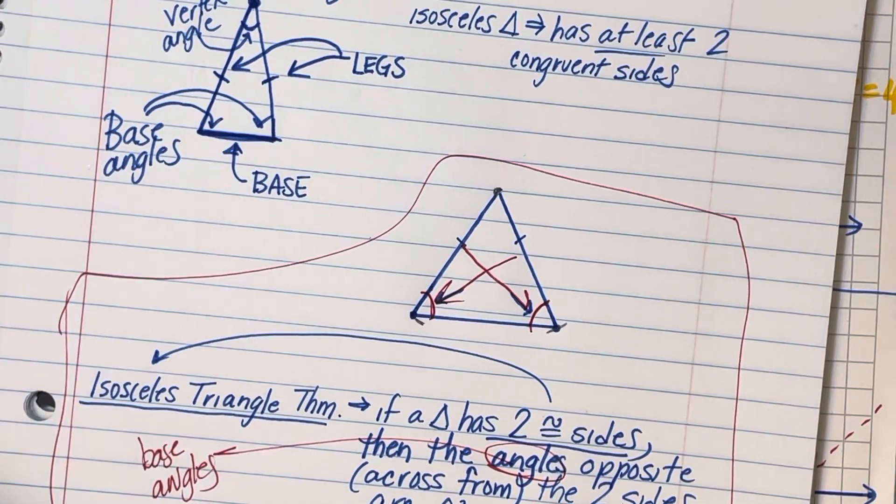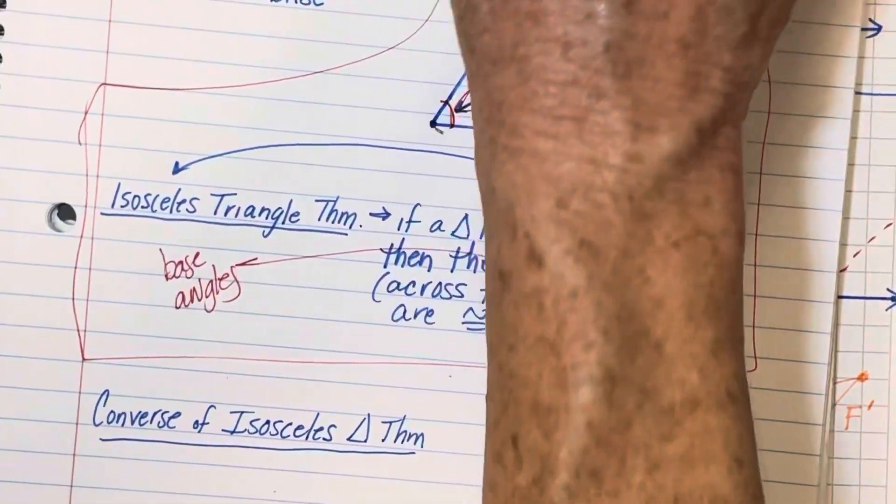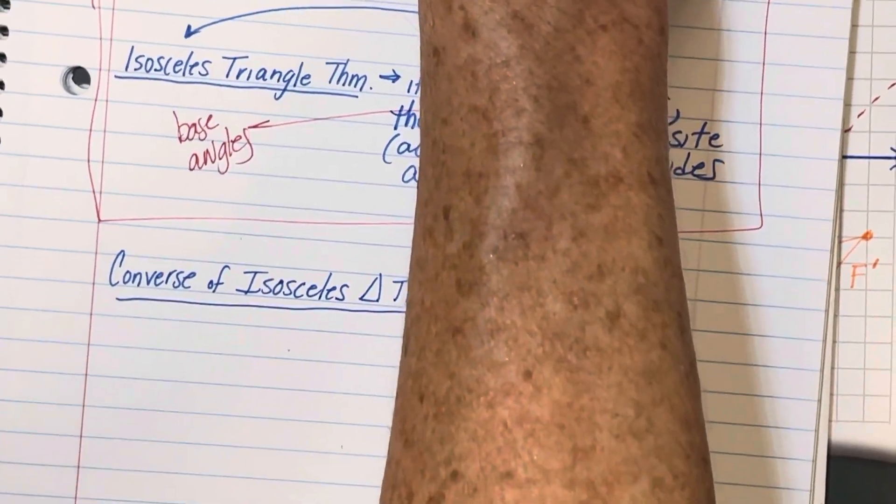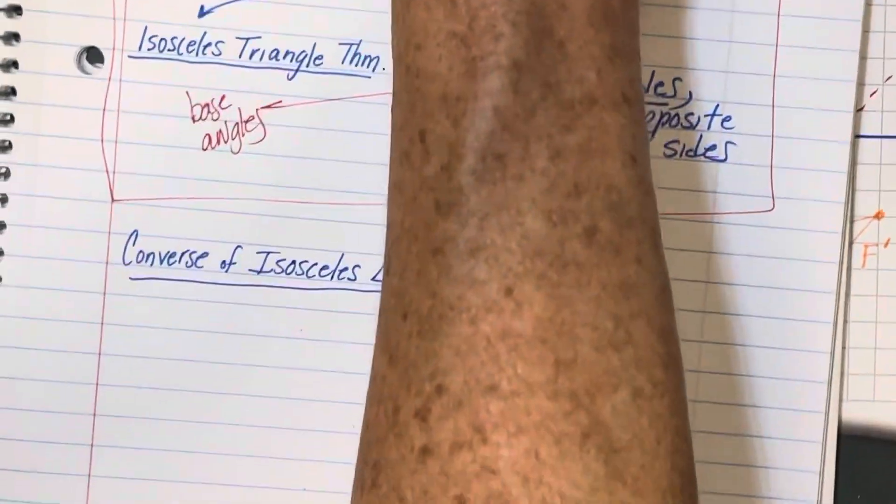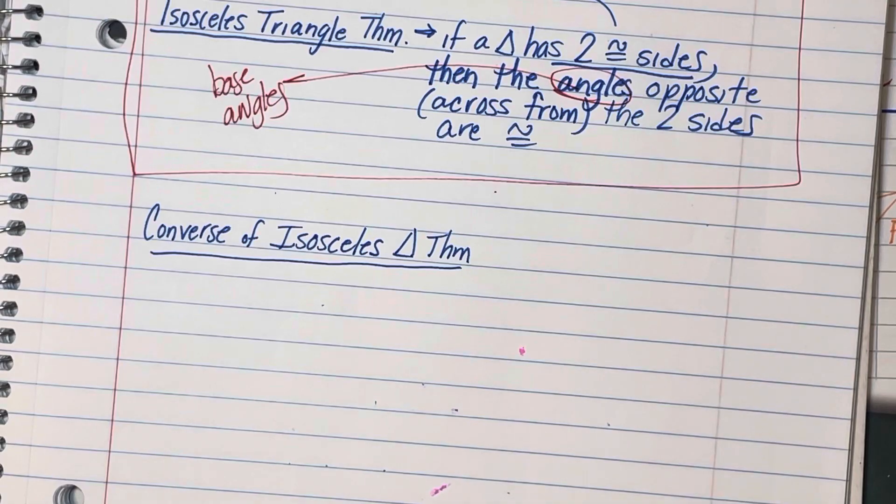Well, it turns out that the converse of this is true as well. And I could construct it for you again. And if I did, I would start with two congruent angles, and then you would see that it formed an isosceles triangle.